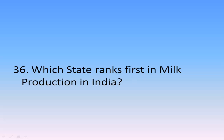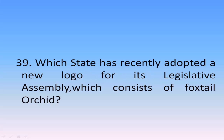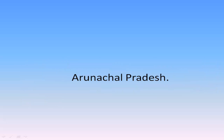Which river flows through the maximum number of Indian states? Godavari — it passes through Maharashtra, Chhattisgarh, Telangana, Andhra Pradesh, Odisha, and Madhya Pradesh. Which state ranks first in milk production in India? Uttar Pradesh. Which state recently adopted a new logo for its legislative assembly featuring the Foxtail Orchid? Arunachal Pradesh — the new logo consists of the national emblem and the state flower, the Foxtail Orchid.